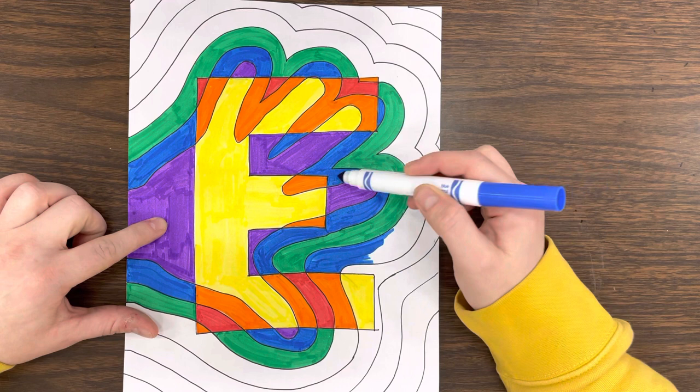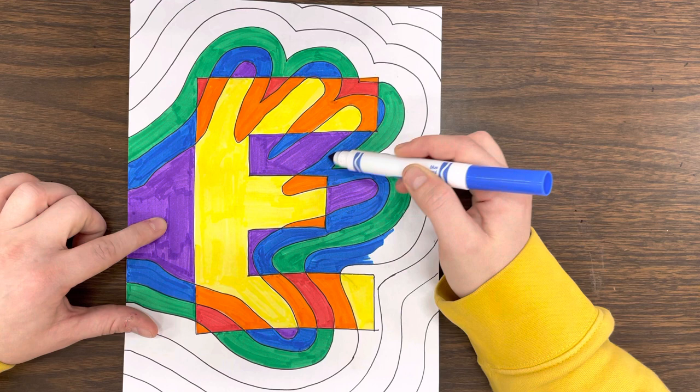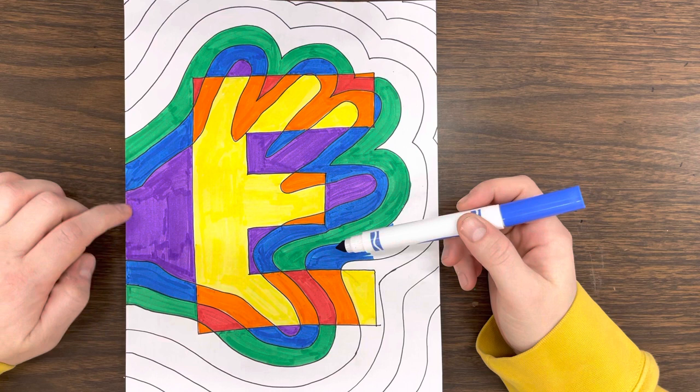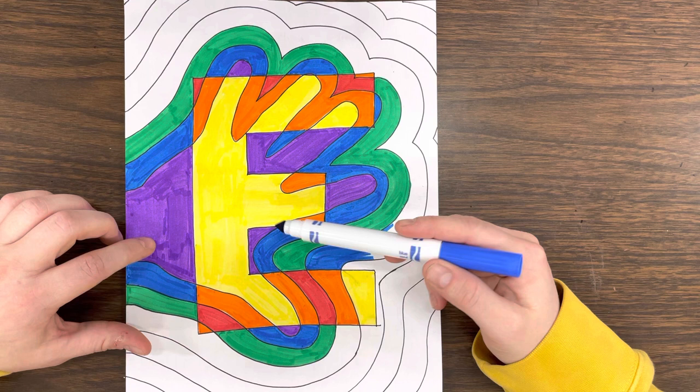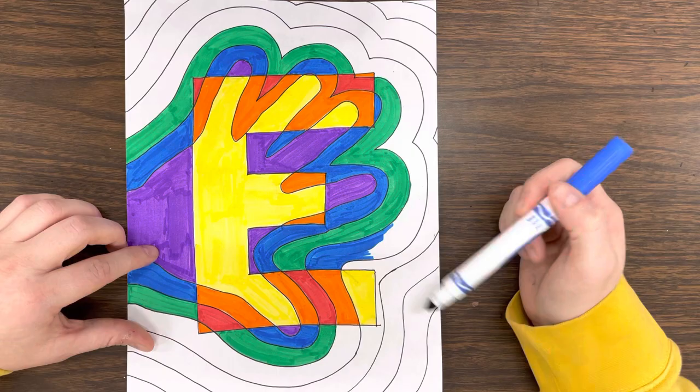After purple, I chose to do blue, and I followed it all the way around. I did not go inside of my letter E. I stayed out of the E and continued to trace it. Now I am on my second pattern. I am doing the same thing with my cool colors as I did with my warm colors, which was going purple, blue, green, blue, purple.